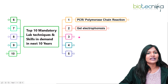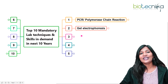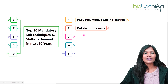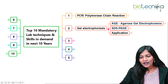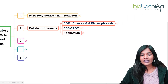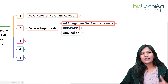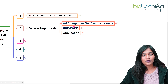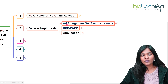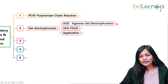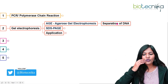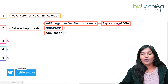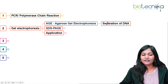The second important technique is gel electrophoresis, which is very important for separating genetic material. You should specifically learn agarose gel electrophoresis (AGE) and SDS-PAGE, as there are different types. Agarose gel electrophoresis is for the separation of DNA — if you want to study how to separate DNA, you can go for agarose gel electrophoresis.